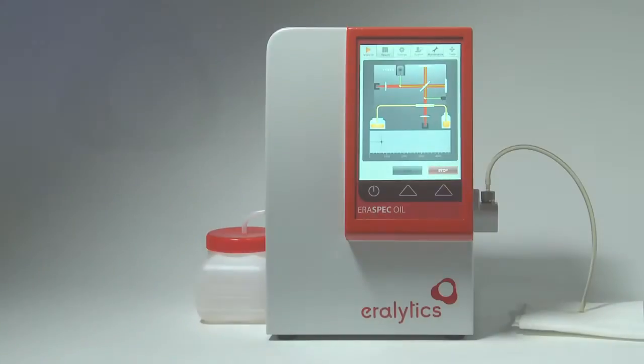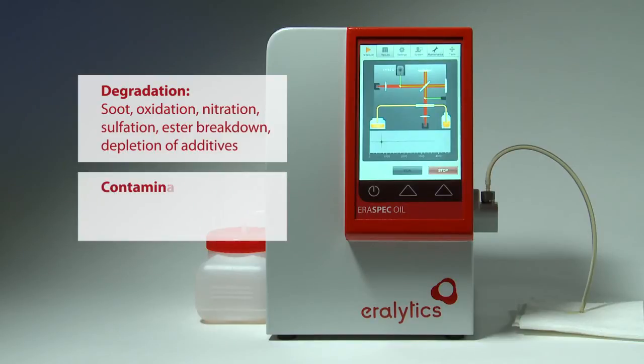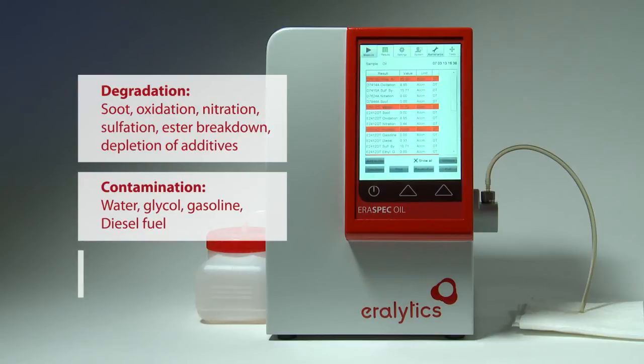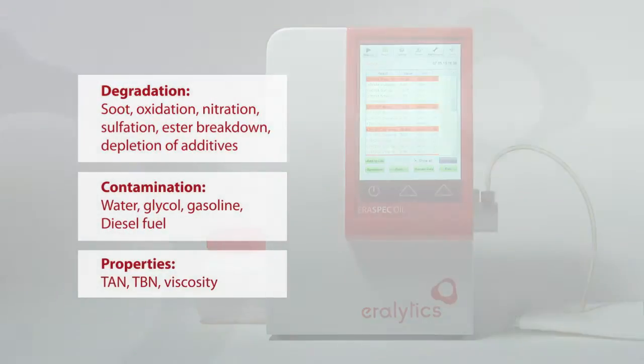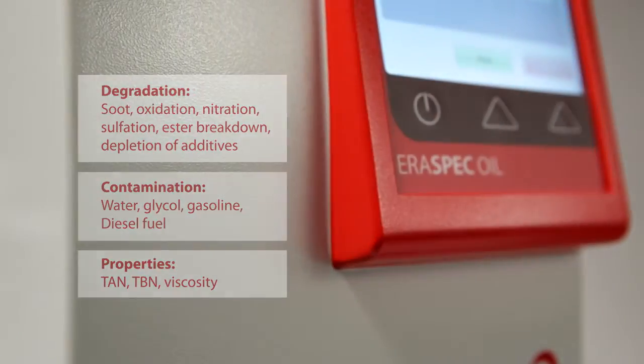Testing includes analysis for degradation parameters such as soot, oxidation, and nitration, as well as contaminants such as water, glycol, and fuels. Additionally, the ERASPEC Oil calculates total acid and total base numbers and predicts the viscosity class.